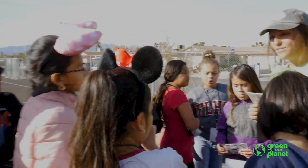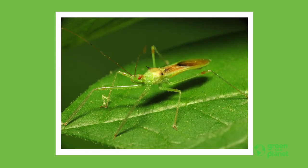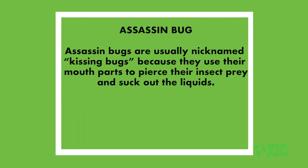Anyone else have something interesting to share? There's a bug called an assassin bug — sometimes called a kissing bug because they use their mouths to pierce insect prey and suck out their juices. Do you think an assassin bug would like to eat a squash bug? Probably — the assassin bug doesn't care what it looks like because it just sucks the juices right out of it.